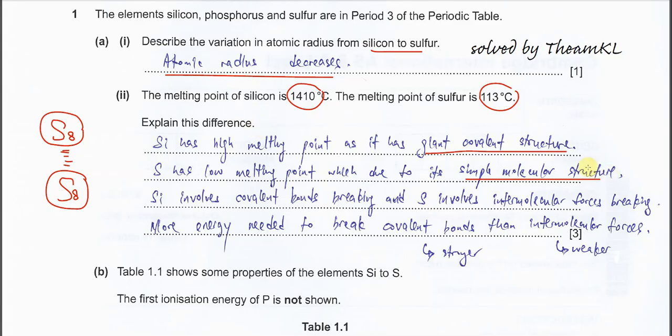First, explain their structure: giant covalent for silicon and simple molecular for sulfur. After that, explain which bond is going to break. For silicon, it involves covalent bond breaking. Sulfur just involves intermolecular force breaking. The covalent bonds inside the sulfur molecules are not going to break, just the intermolecular forces. That's why more energy is needed to break the covalent bonds in silicon than the intermolecular forces in sulfur.